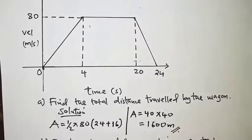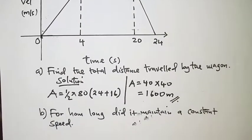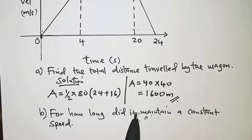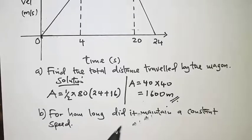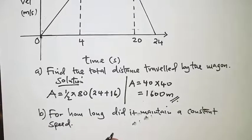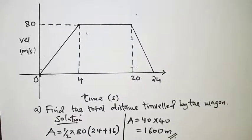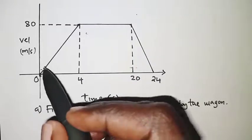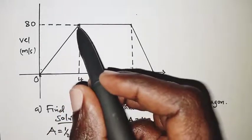Apart from that, part b of the question asks: for how long did it maintain a constant speed? We will have to determine that from the graph.